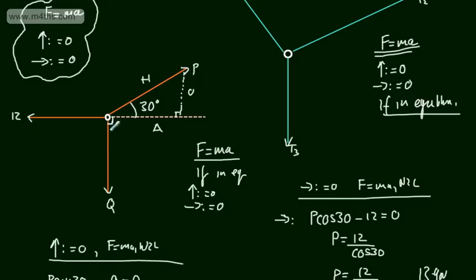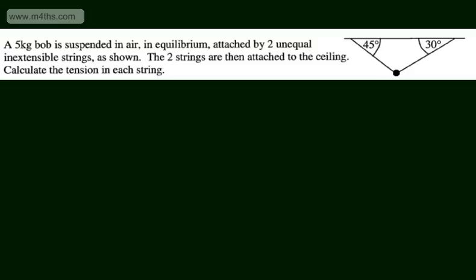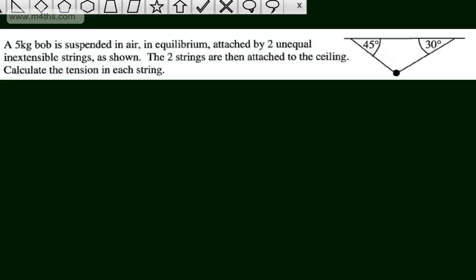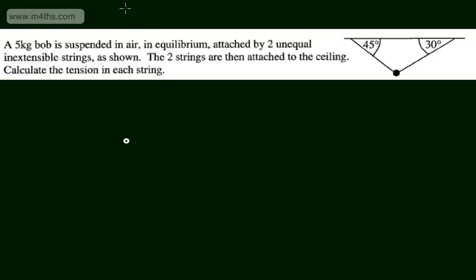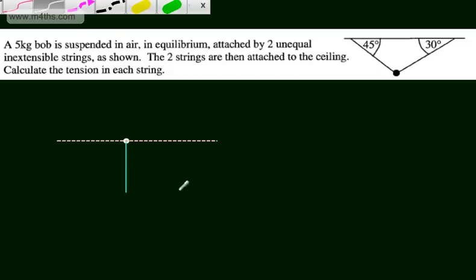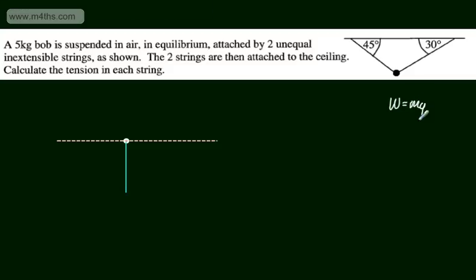Let's do a slightly more challenging example. We've got a 5 kg bob suspended in air in equilibrium, attached by two unequal inextensible strings. The two strings are attached to the ceiling. We need to calculate the tension in each string. I'll draw a quick sketch — the most common error is forgetting to include the weight, which is the force acting downward. Weight equals mass times gravity, so W equals 5g Newtons, where g is 9.8.